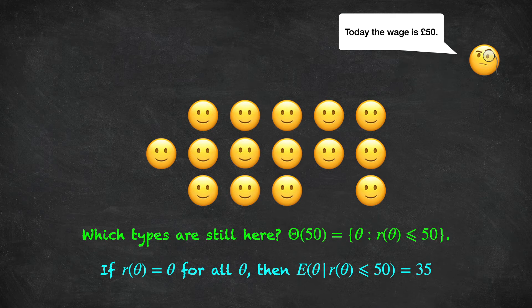That's a basic idea of how we model and capture asymmetric information here, using rational expectations. When the firm makes its expected revenue calculations, it assumes the supply side behaves rationally — workers only stay if they want to. Even though the firm can't identify specific types, it can assume that nobody remaining has a reservation wage above the current market wage, and so it calculates a conditional expected revenue based on that information. Let's go on paper now and develop these ideas.